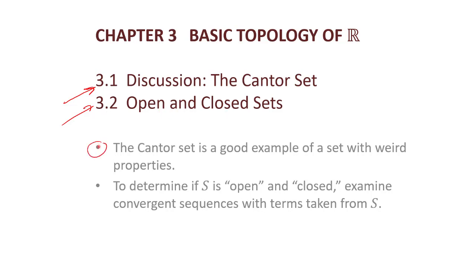The Cantor set is a good example of a set with weird properties. To determine if a set S is open and closed, we examine convergent sequences with terms taken from that set S. Alright, those are the big ideas. Let's take a look.